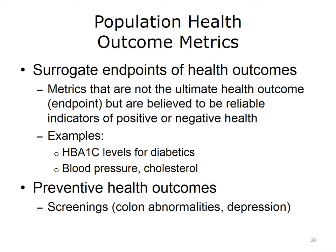A big issue with population health outcome metrics relates to the idea of surrogate endpoints. Surrogate endpoints are metrics that are not the ultimate health outcome or endpoint, but are believed or shown through evidence to be reliable indicators of positive or negative health outcomes. Some examples include the HbA1c level for diabetics, or blood pressure and cholesterol for other types of patients. These metrics are common to population health data analytics. Population health also highlights the role of prevention through screenings for various conditions such as colon abnormalities and depression.